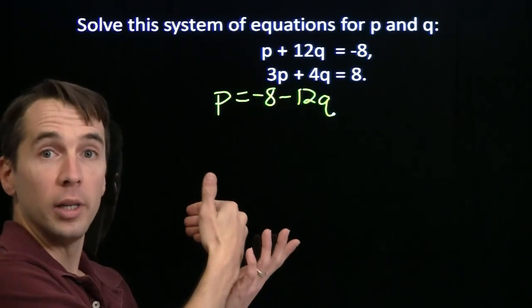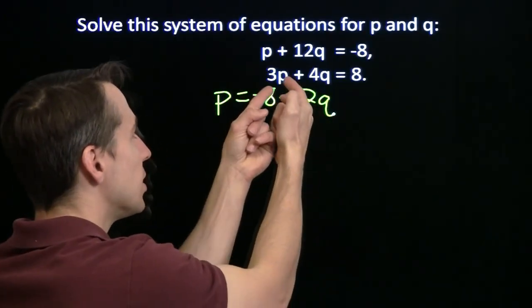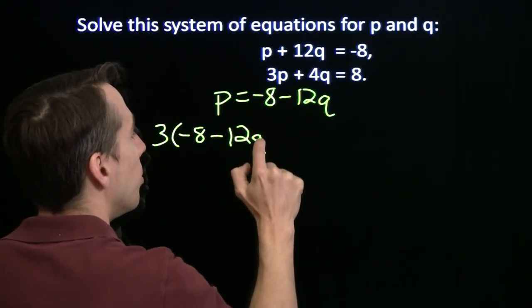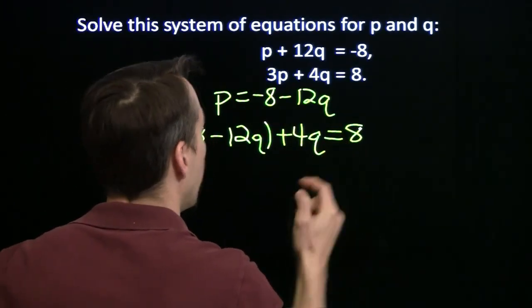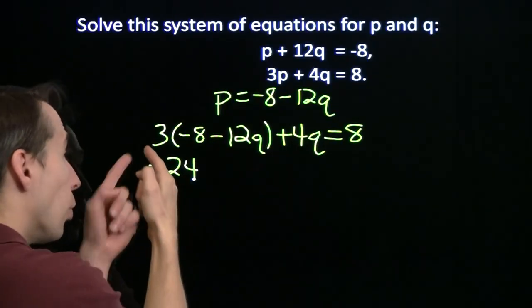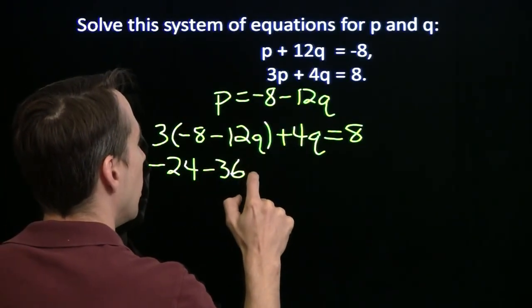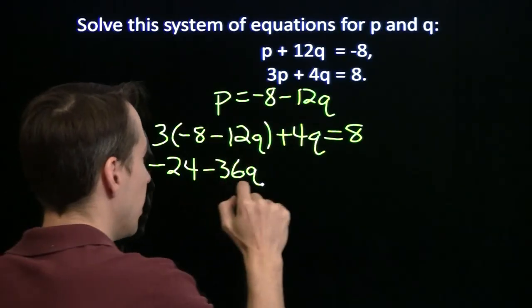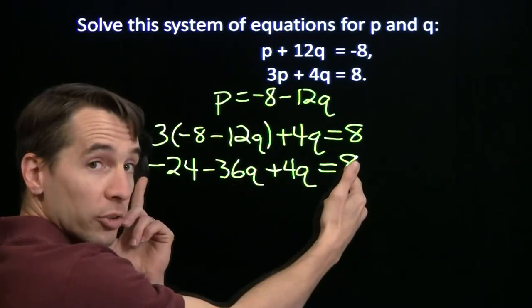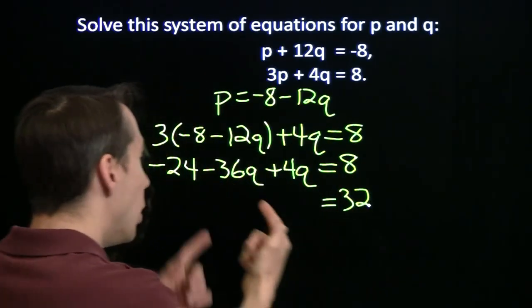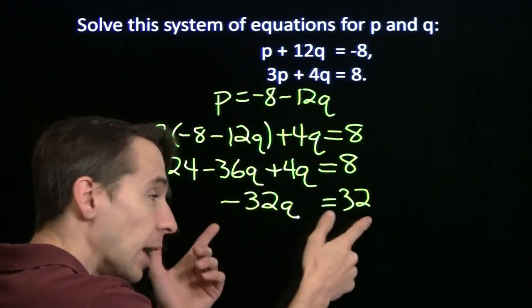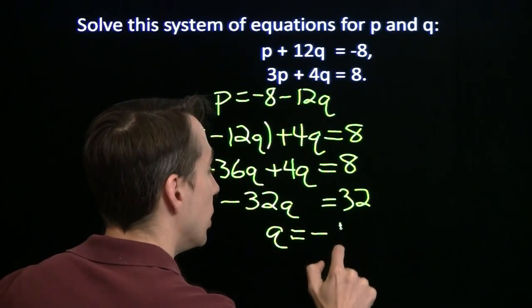And now, we're right back where we were in the previous problem. We've got p in terms of q. We can substitute this in for p in the second equation. And we have 3 times our expression here for p plus 4q equals 8. One variable linear equation. We're all set. 3 times negative 8 is negative 24. 3 times negative 12q is negative 36q. And we're going to add 4q, and that still equals 8. So we'll add the 24 to both sides. We'll get 32 over here. We'll combine the negative 36q plus 4q. That gives us negative 32q. And then we divide both sides by negative 32, and we get q is negative 1.